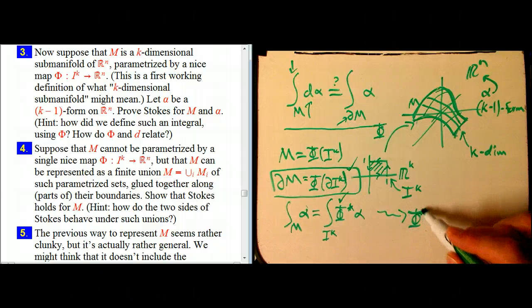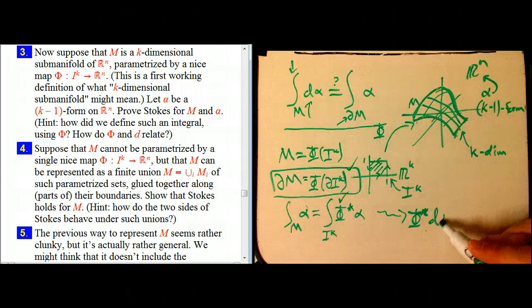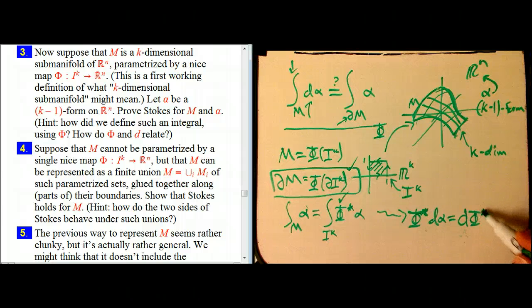Pullback and d, well, absolutely, pullback of d of alpha, that also, that was one of these naturality properties that we were using a lot when we were doing some explicit integrals. Oh, whoa, so many parts of this video ago. So pullback and d play well together as well.